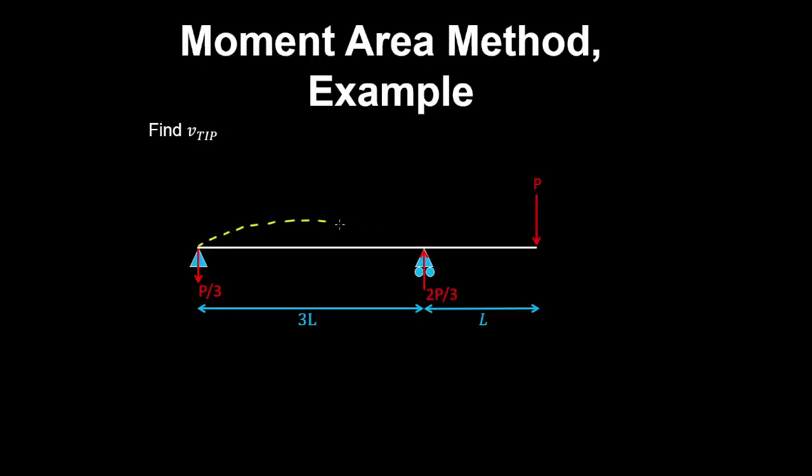Find the deflection at the tip of this beam, which has an overhang. So by intuition, the deflected shape would look something like this.